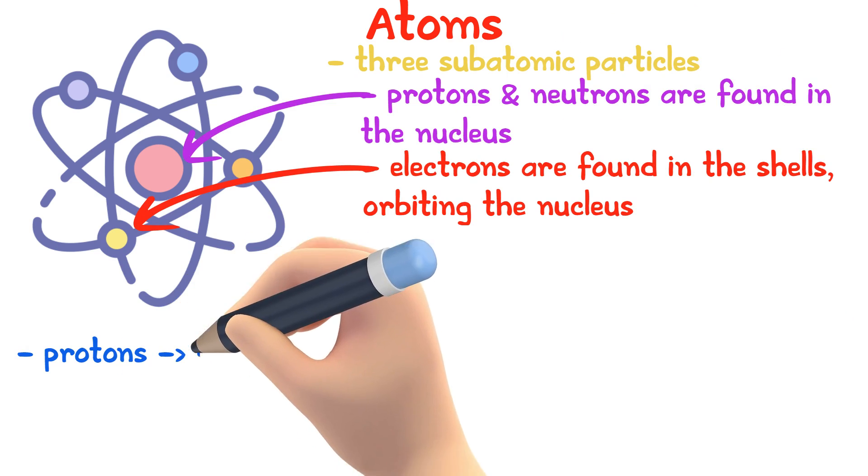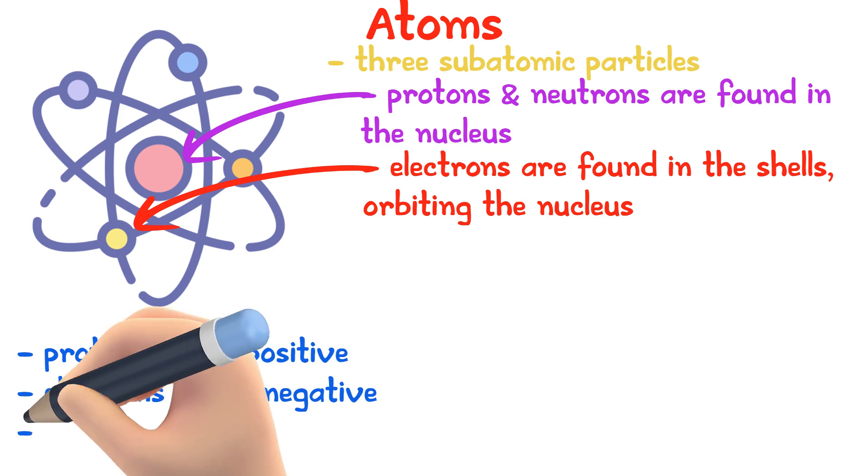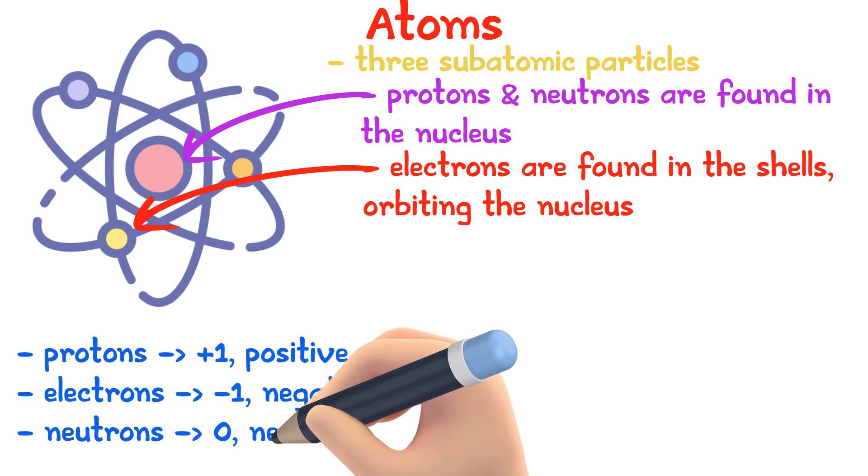Protons have a charge of plus 1, so they are positive. Electrons minus 1, so they are negative and neutrons are 0 because it's neutral.